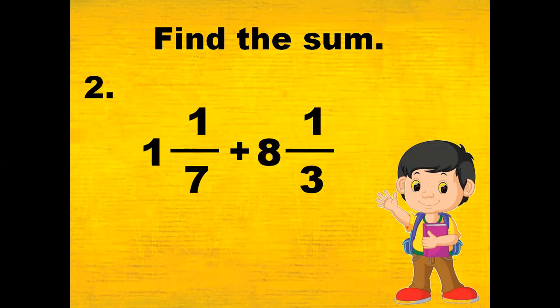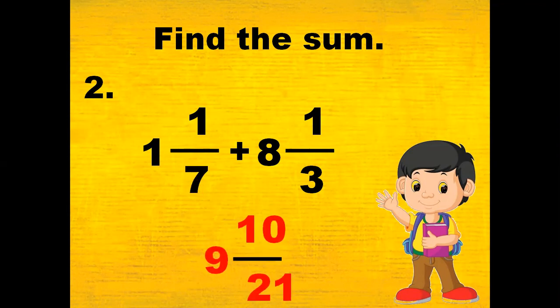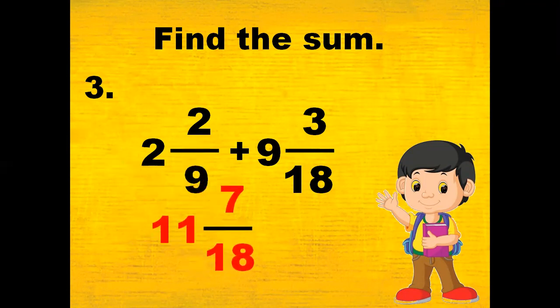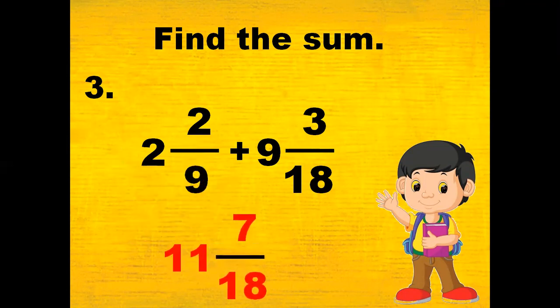Number 2, find the sum of 1 and 1 seventh plus 8 and 1 third. Number 3, find the sum of 2 and 2 ninths plus 9 and 3 eighths. And the answer is 11 and 7 eighths.